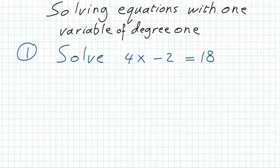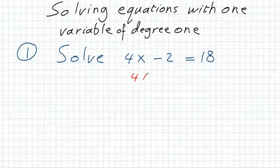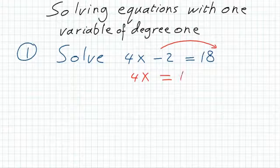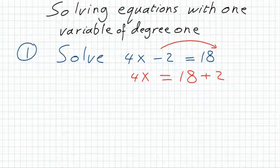To solve this equation without a calculator, you need to isolate x alone in one of the sides of the equation. We begin with transferring 2 to the other side, so it will be a positive 2 over there. So 4x is equal to 20.